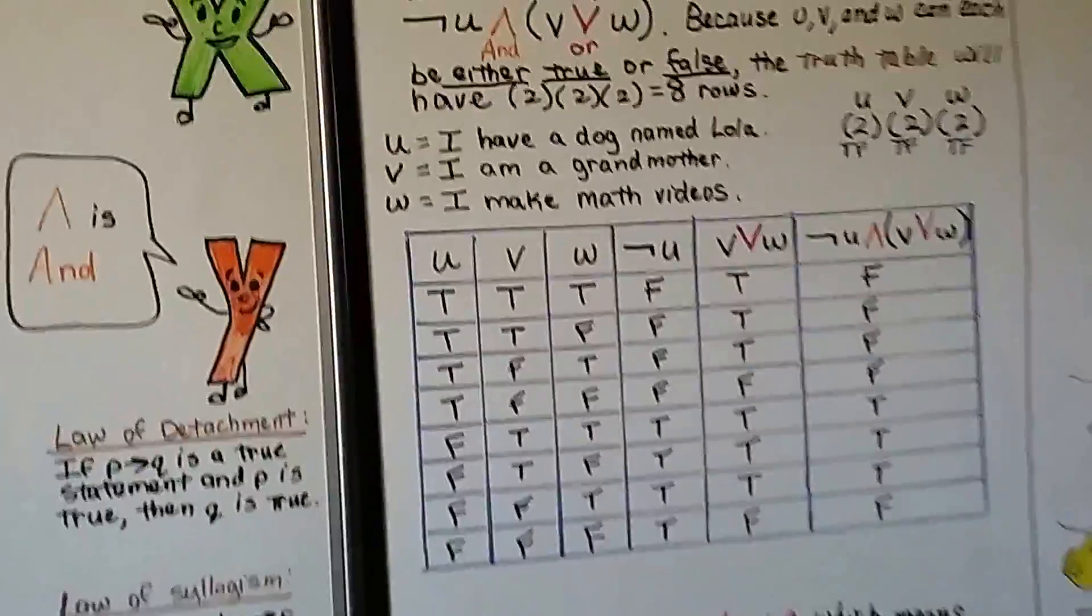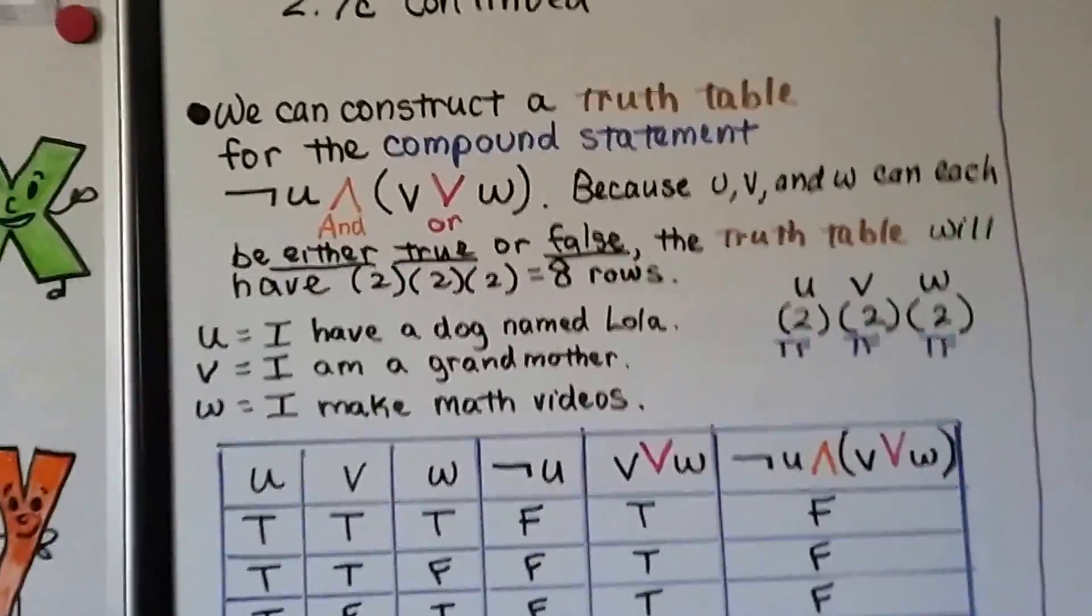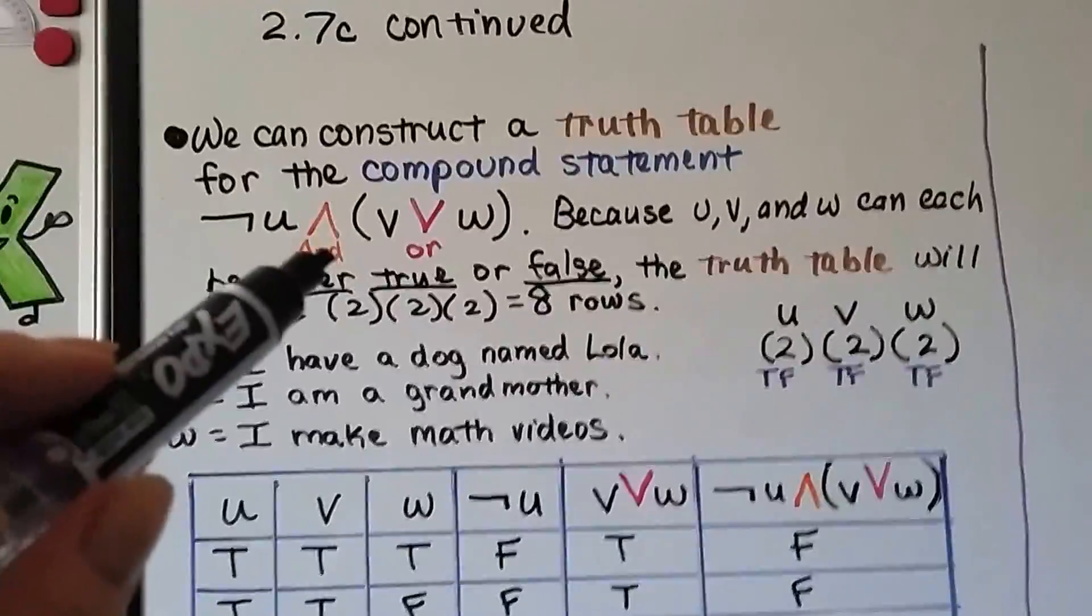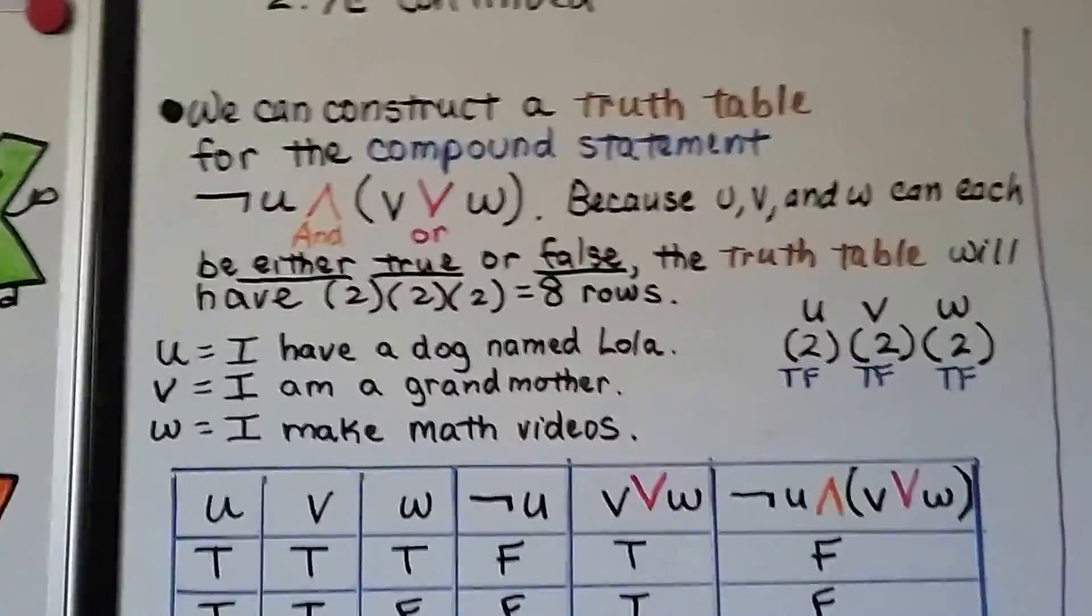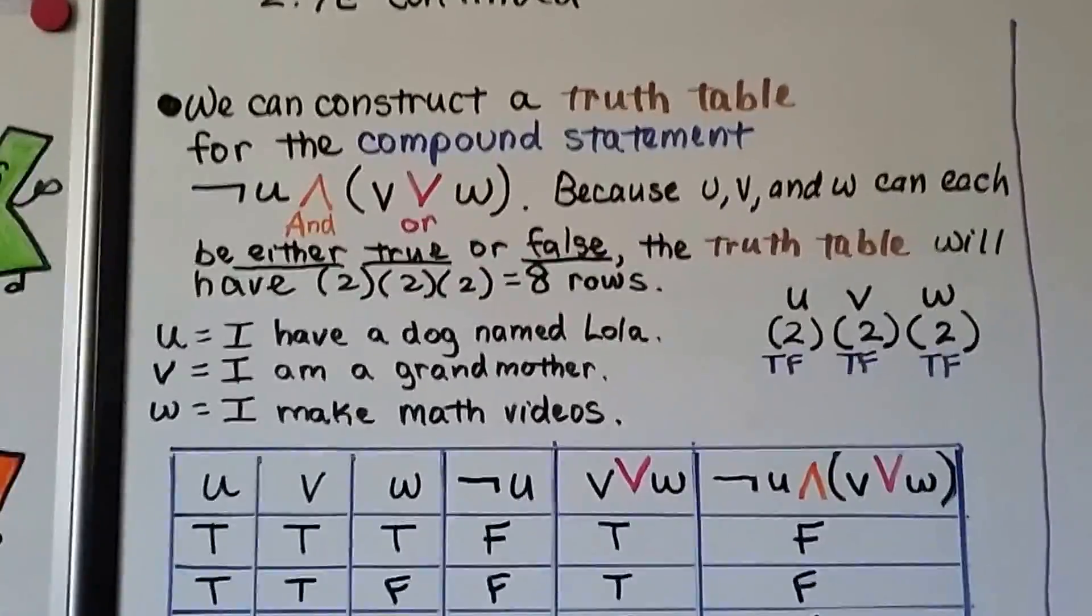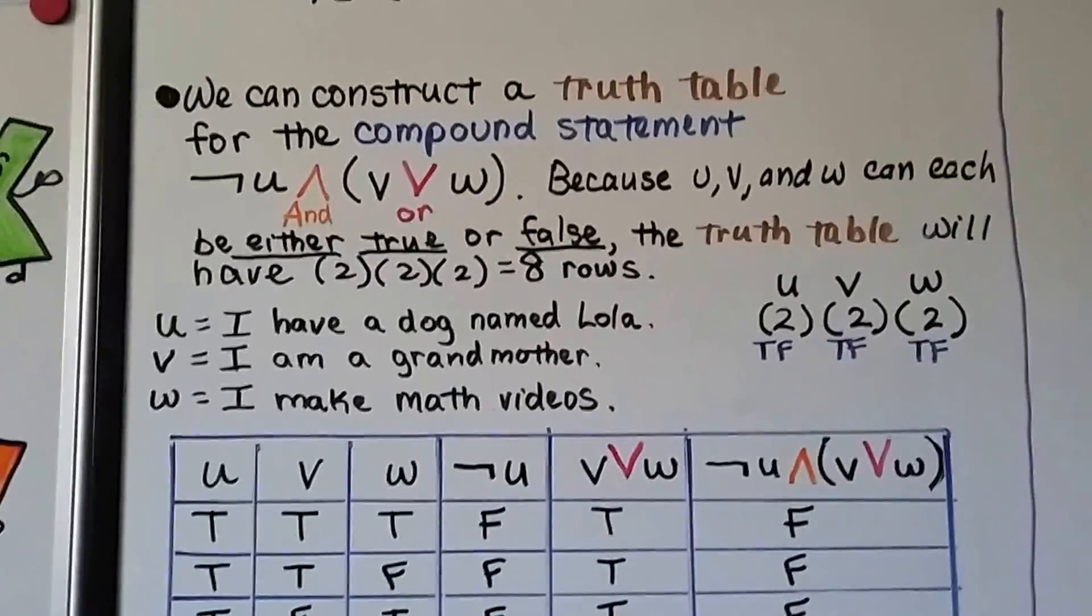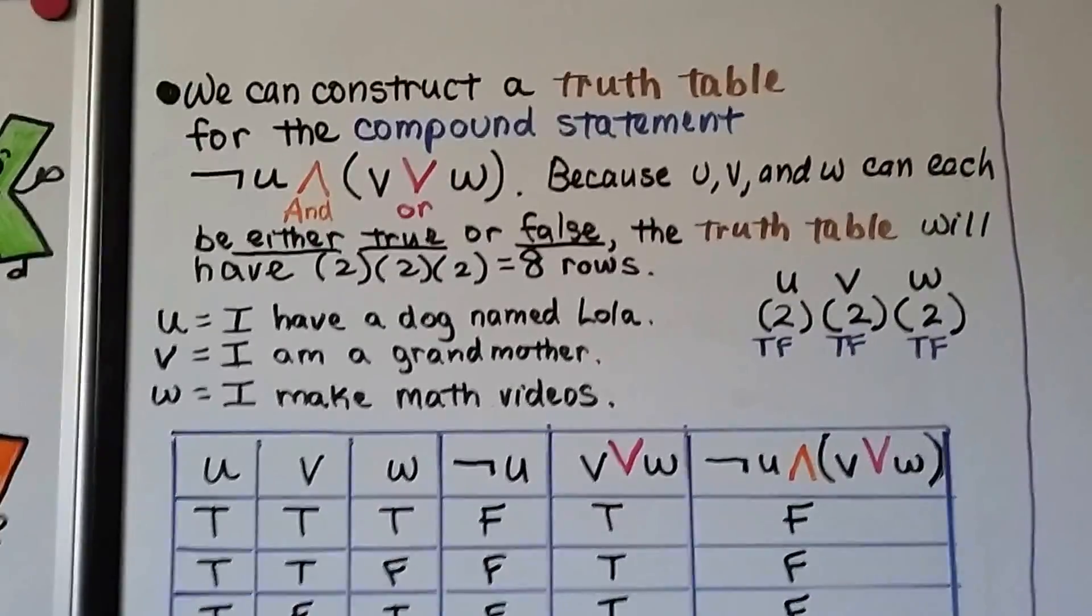We can construct a truth table for the compound statement. This is not U and V or W. So U, V, and W are going to be sentences, statements. And because U, V, and W can each be either true or false, the truth table will have 2 times 2 times 2, which equals 8 rows.